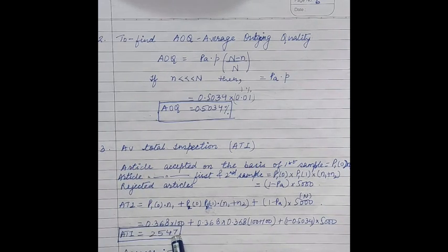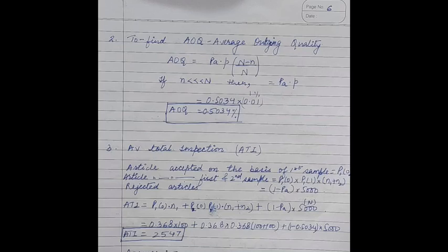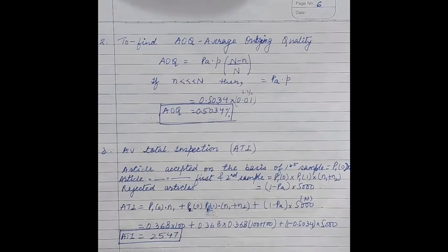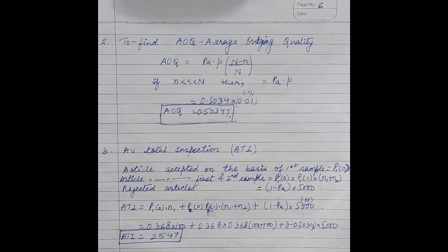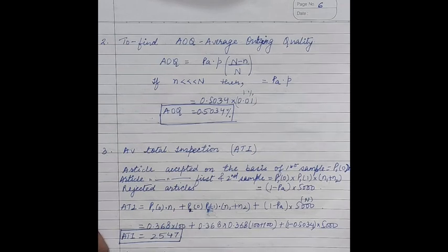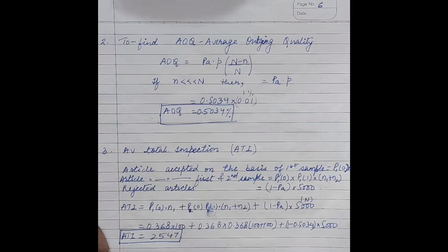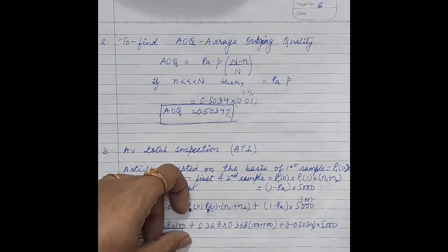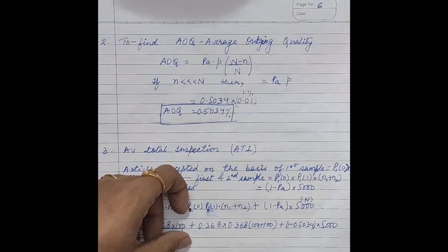To summarize, the answers are: probability of acceptance PA, average outgoing quality AOQ, and average total inspection ATI. Writing all three answers completes the full solution. Thank you, students, and happy learning.